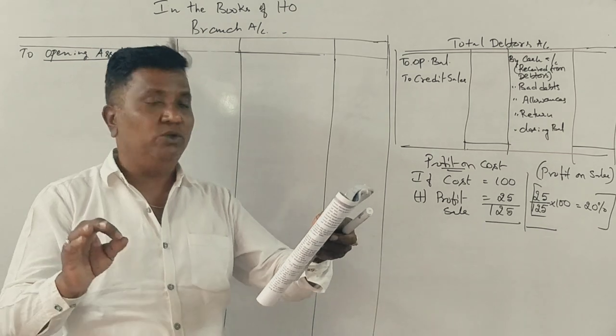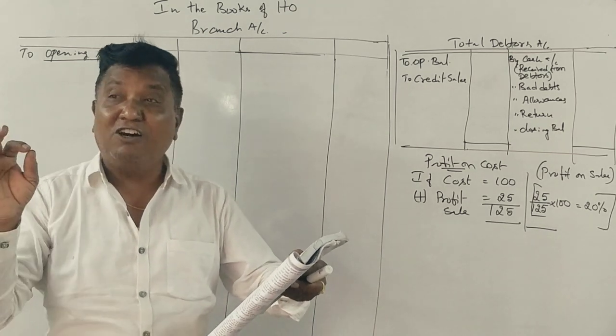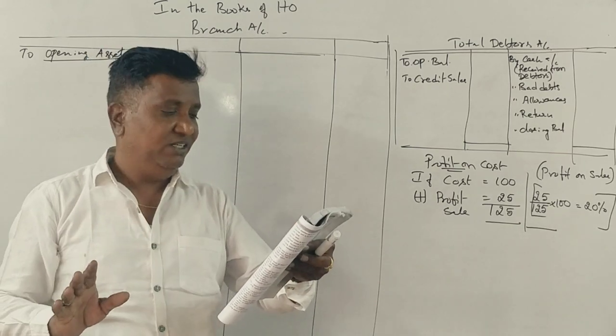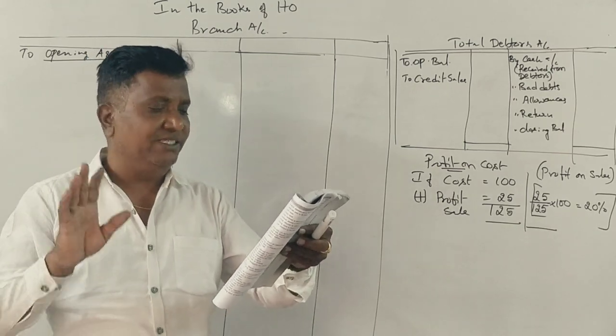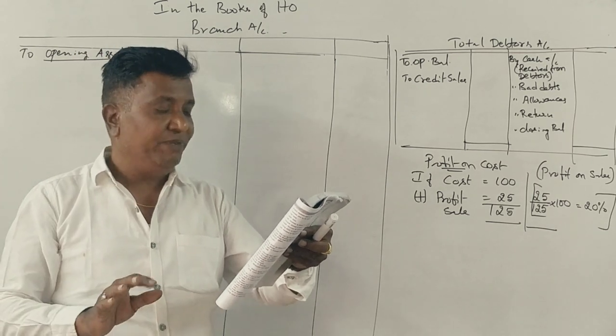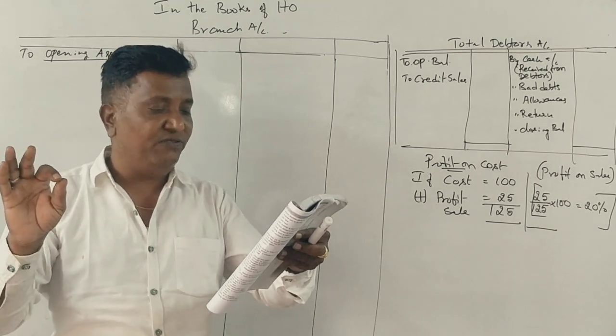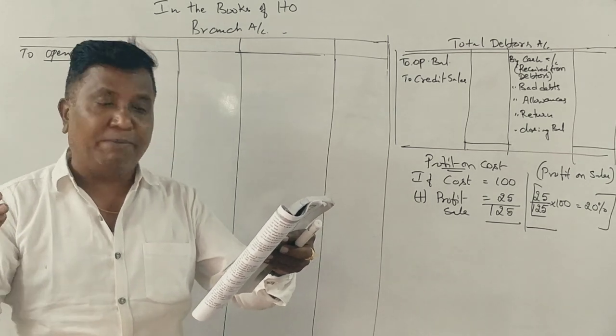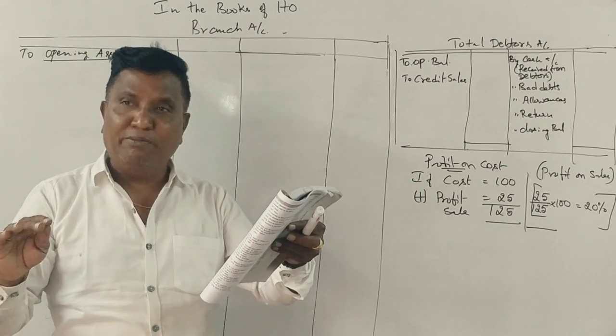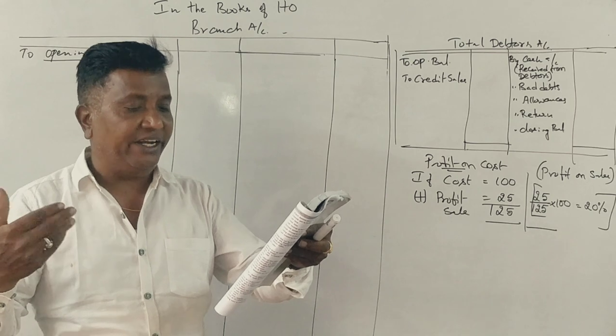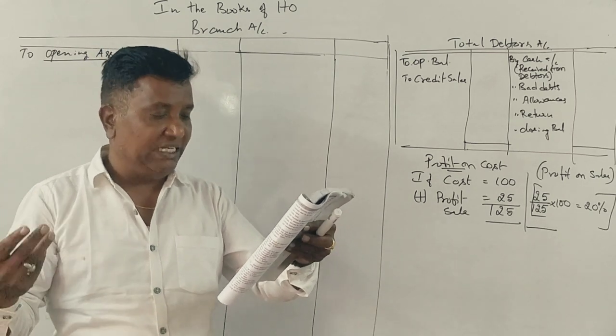Stock on 1-4-2017 at invoice price. Debtors 1-4-2017, goods sent to branch at invoice price. Expenses paid by the head office for salary, rent and other expenses. Cash remitted by branch, cash sales, cash collected from debtors and the total sales.